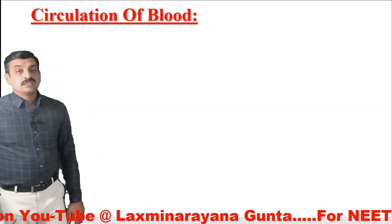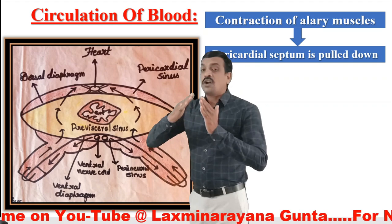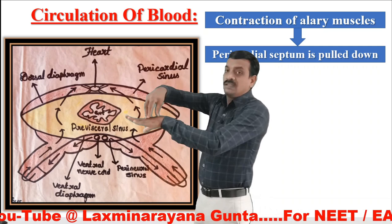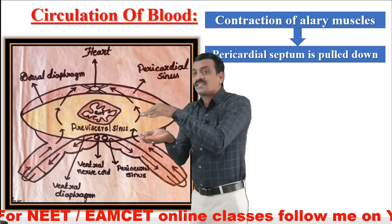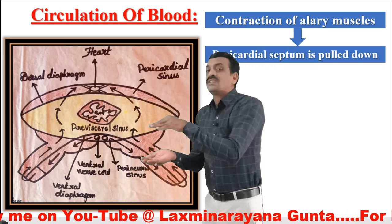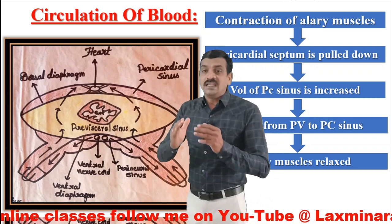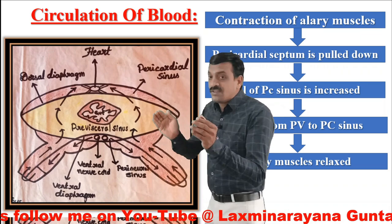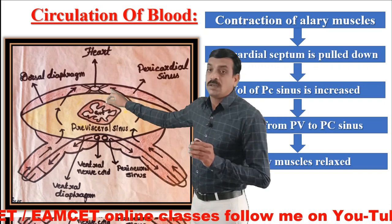Now let us see how blood is circulated. As the alary muscles contract, the pericardial septum becomes flat, increasing the volume of the pericardial sinus and decreasing the pressure inside. As a result, blood from the perivisceral sinus enters into the pericardial sinus. When the alary muscles relax, the volume of the pericardial cavity decreases and the pressure increases. Due to the valvular pores in the dorsal septum, blood cannot flow back.